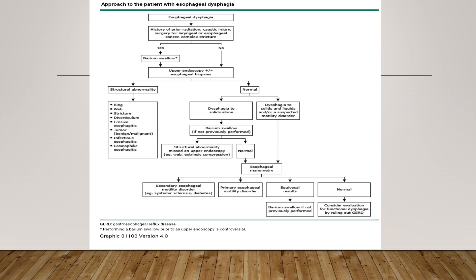If endoscopy is anatomically normal with no structural abnormality, return to history — was the dysphagia to solids only, or to solids and liquids? If only to solids, perform a barium swallow if not previously done. If a structural abnormality was missed on upper GI endoscopy, it may be revealed on barium swallow. If dysphagia was to both liquids and solids — suggesting motility disorder — or if barium swallow and endoscopy are normal, proceed to esophageal manometry.